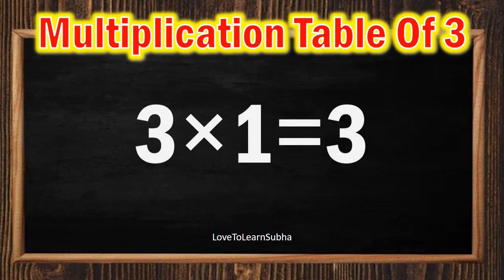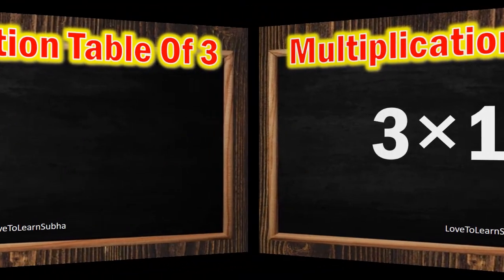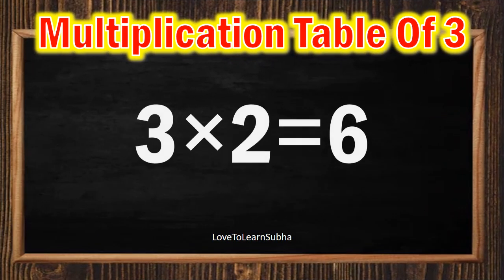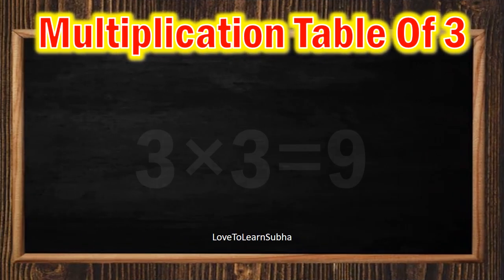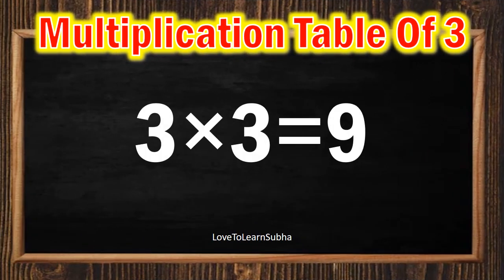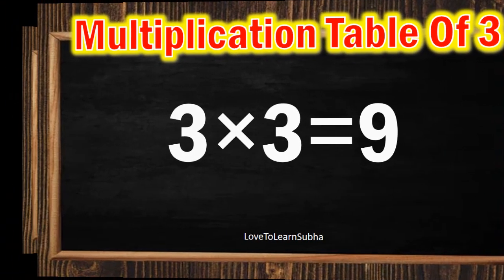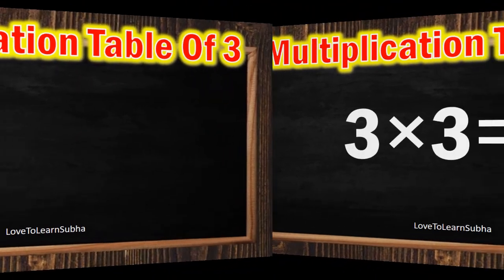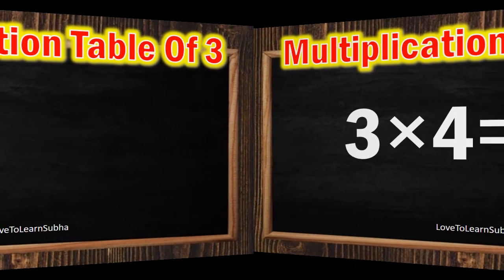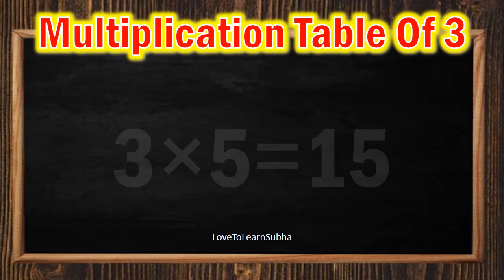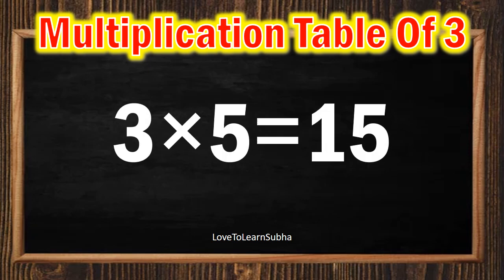3 1s are 3, 3 2s are 6, 3 3s are 9, 3 4s are 12, 3 5s are 15.